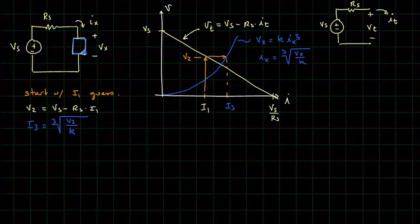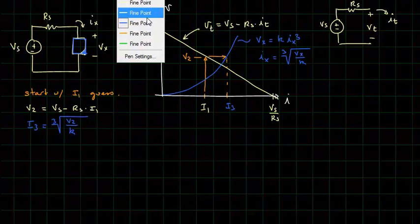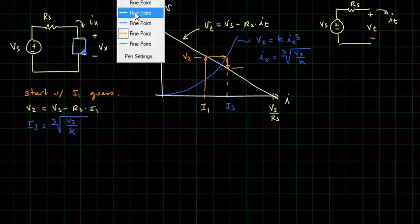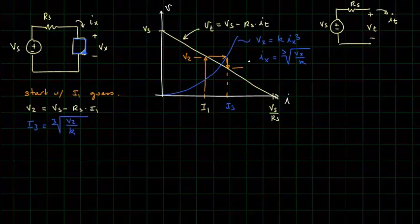Now, we will once again project down to the load line, where we will have a new voltage. Call it V3 at this point here. V3 will be equal to VS minus RS times I3.